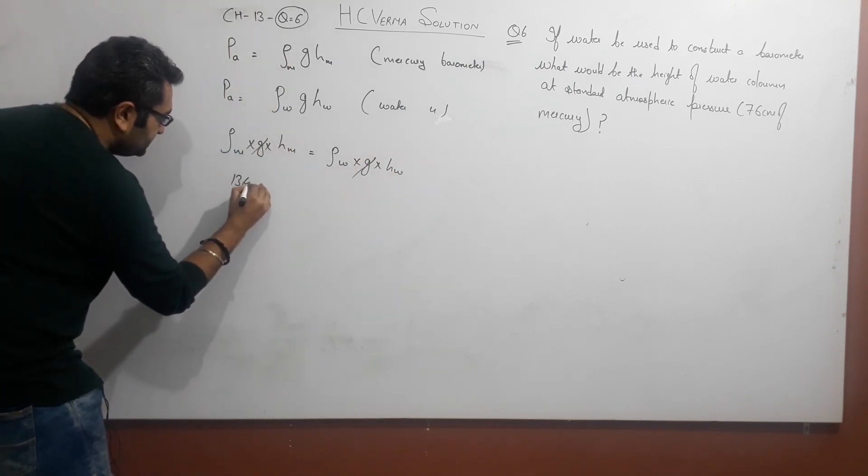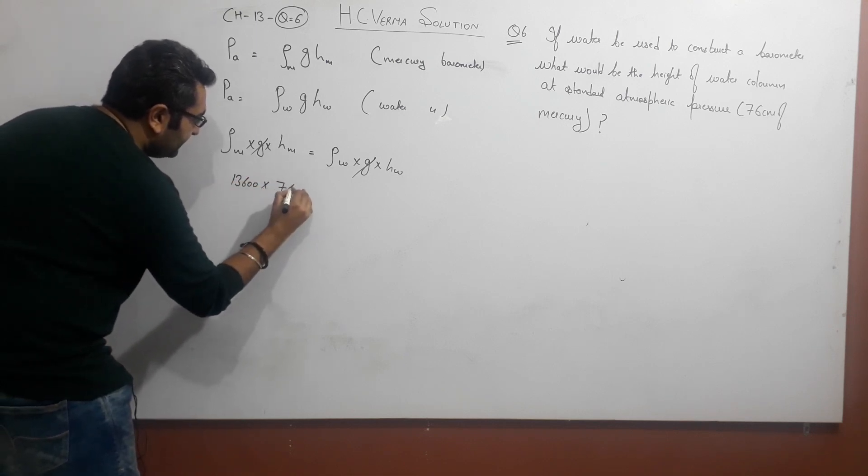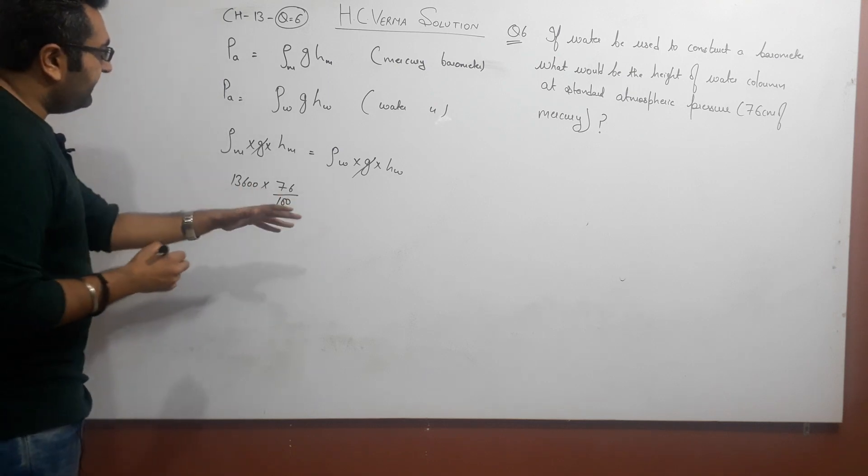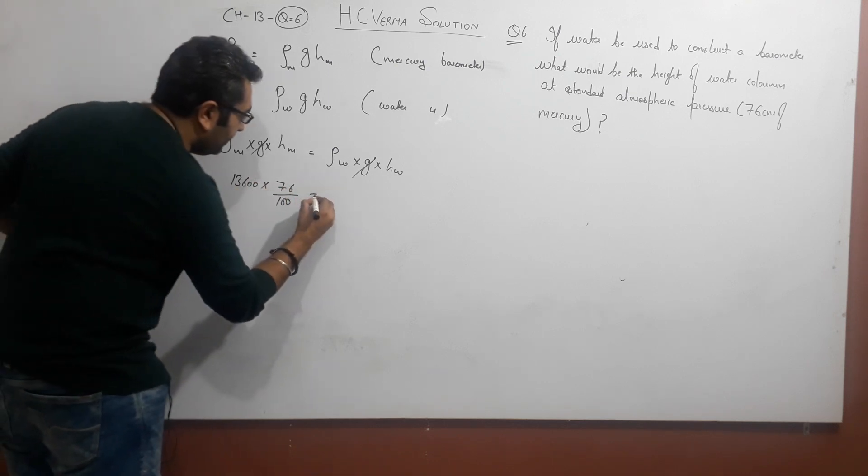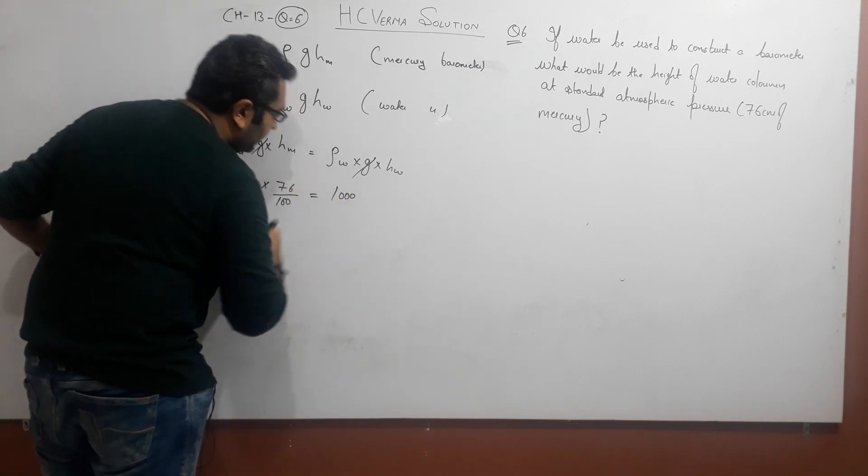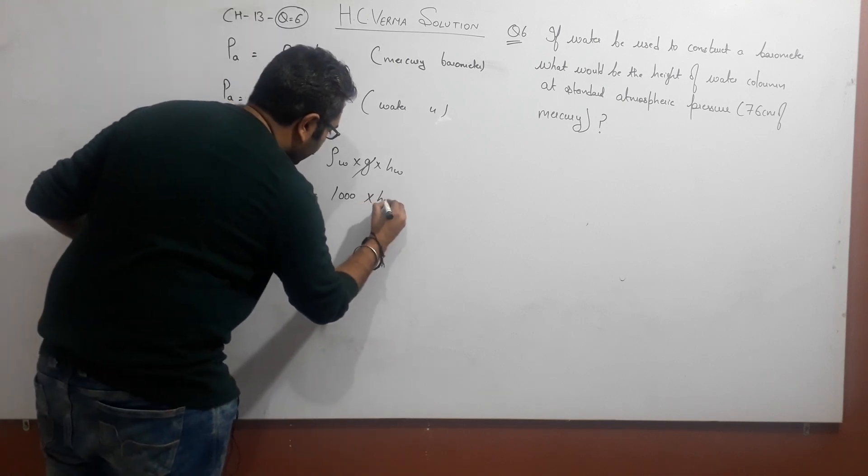Mercury density, you know, 13,600 kg per meter cubed, and the height of mercury is 76 cm given. I'll convert to meters by dividing by 100. Water density, you know, 1000 kg per meter cubed. Height of water is what we're finding.